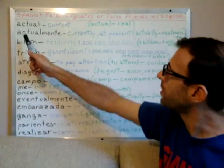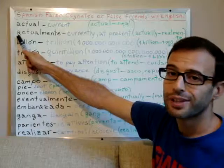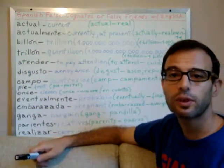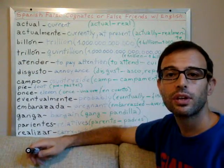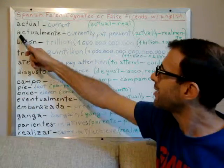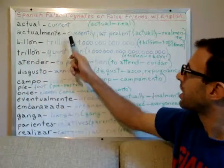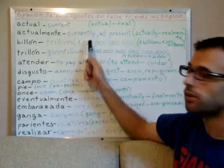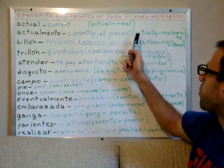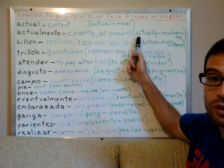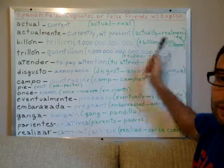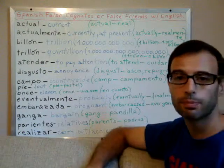Therefore, the word 'actualmente' does not translate to 'actually.' 'Actualmente' means 'currently' or 'at present,' while the word 'actually' means 'realmente' in Spanish.